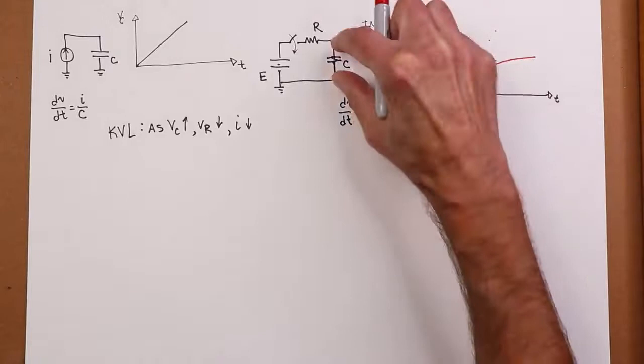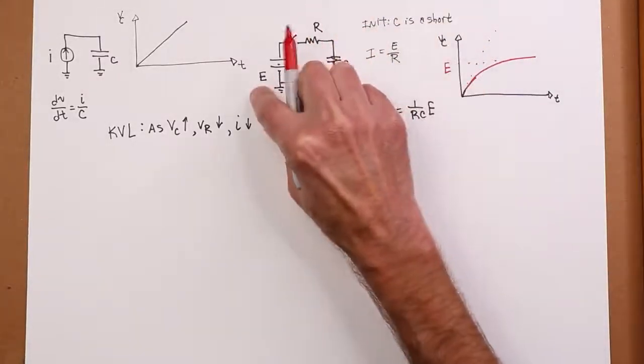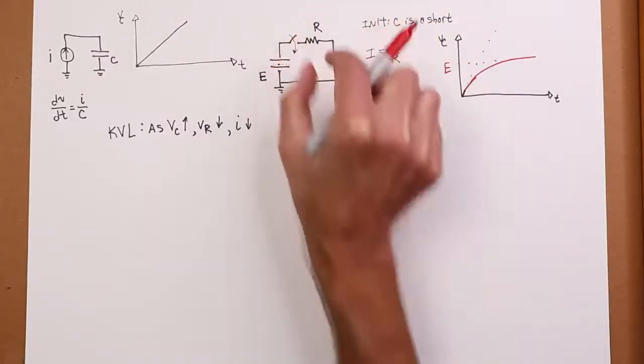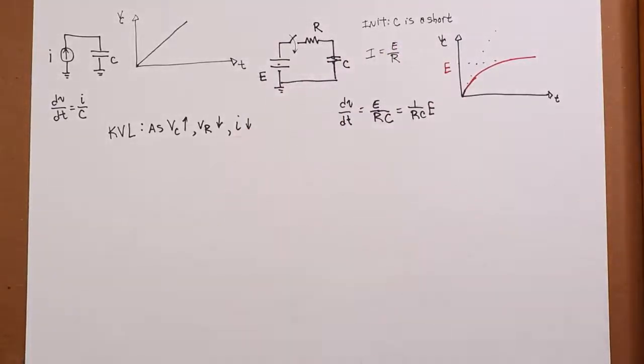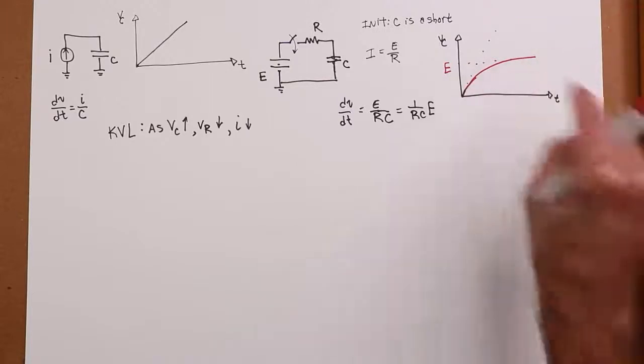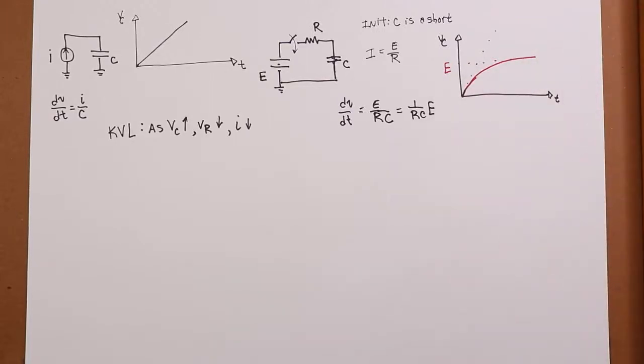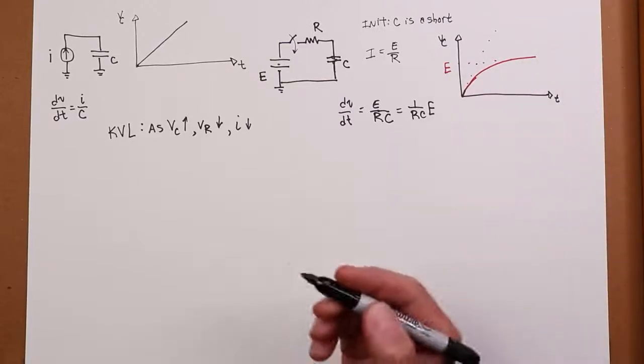And the question is, where does it flatten out to? Well, obviously, it's going to flatten out at E. Because as this voltage gets very, very close to E, there's a minuscule amount of voltage left to drop across the resistor. The current becomes minuscule likewise, and the rate of change of capacitor voltage pretty much goes to zero. So I have this interesting kind of shape.